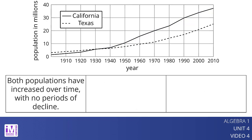We can tell that both populations have increased over time with no periods of decline because both graphs slant upward from left to right.